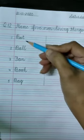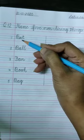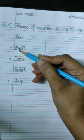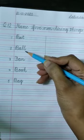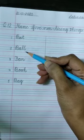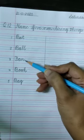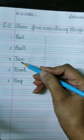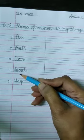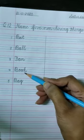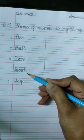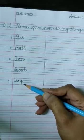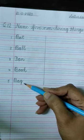Let's repeat. Bat: B-A-T. Ball: B-A-L-L. Fan: F-A-N. Book: B-O-O-K. Bag: B-A-G.